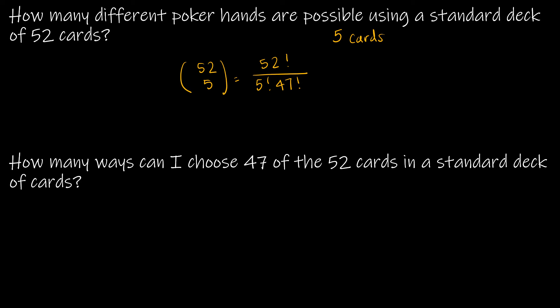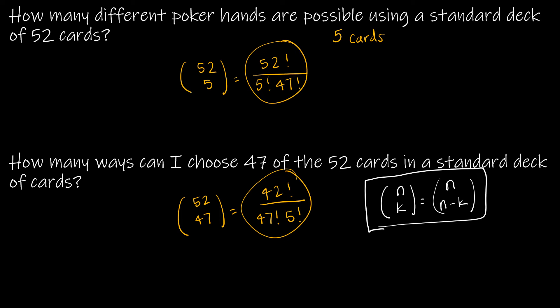The second question is obviously related to the first. It says, how many ways can I choose 47 of the 52 cards in a standard deck of cards? Well, that would be 52 choose 47, which would be 52 factorial over 47 factorial times 52 minus 47 factorial, which is 5 factorial. Now, as we can see, these two are exactly the same. So we're saying that n choose k is the same as n choose n minus k. This is called an identity.